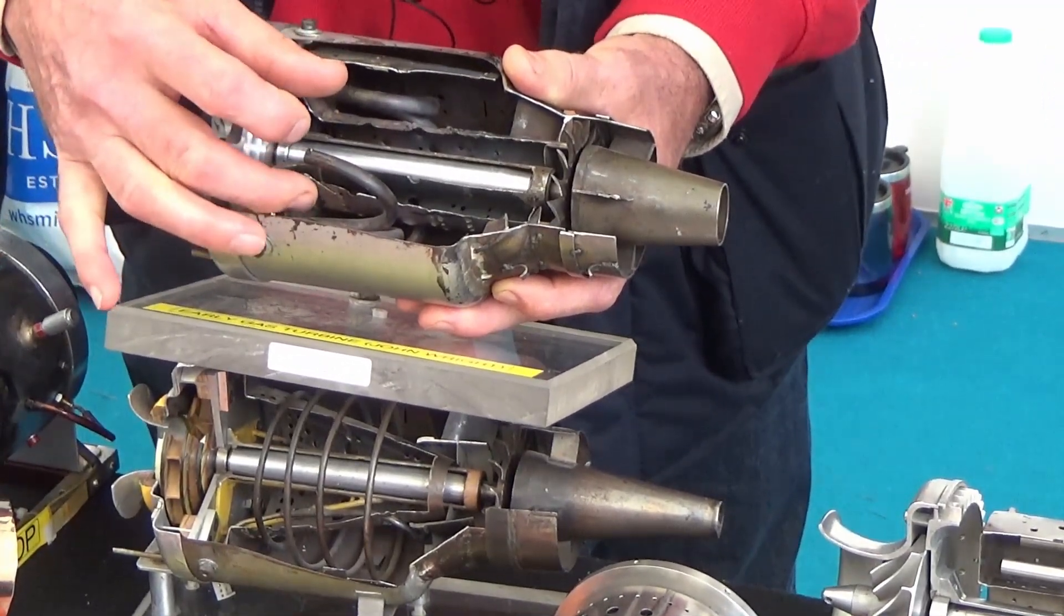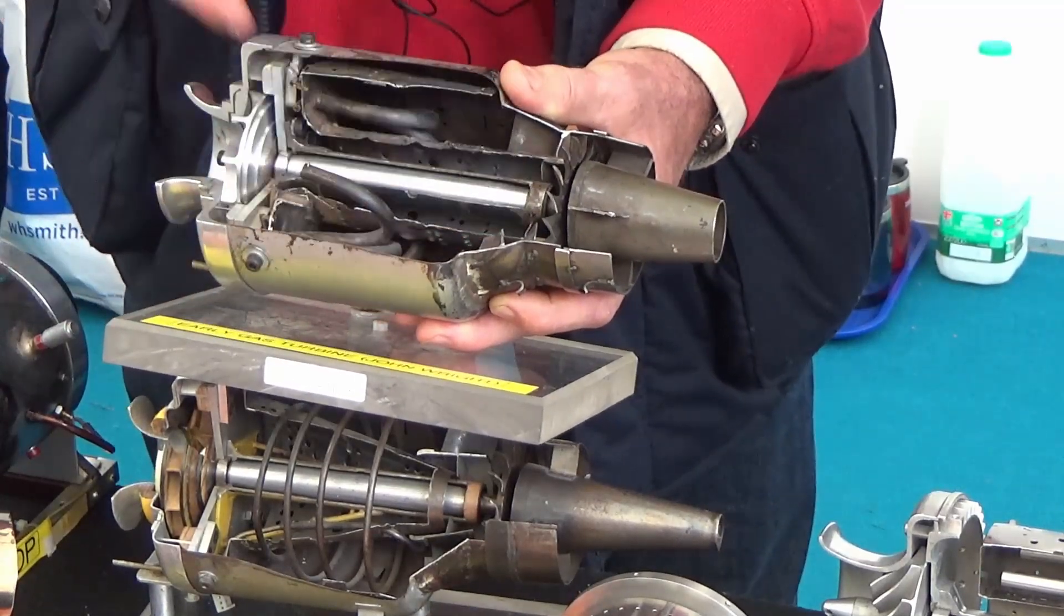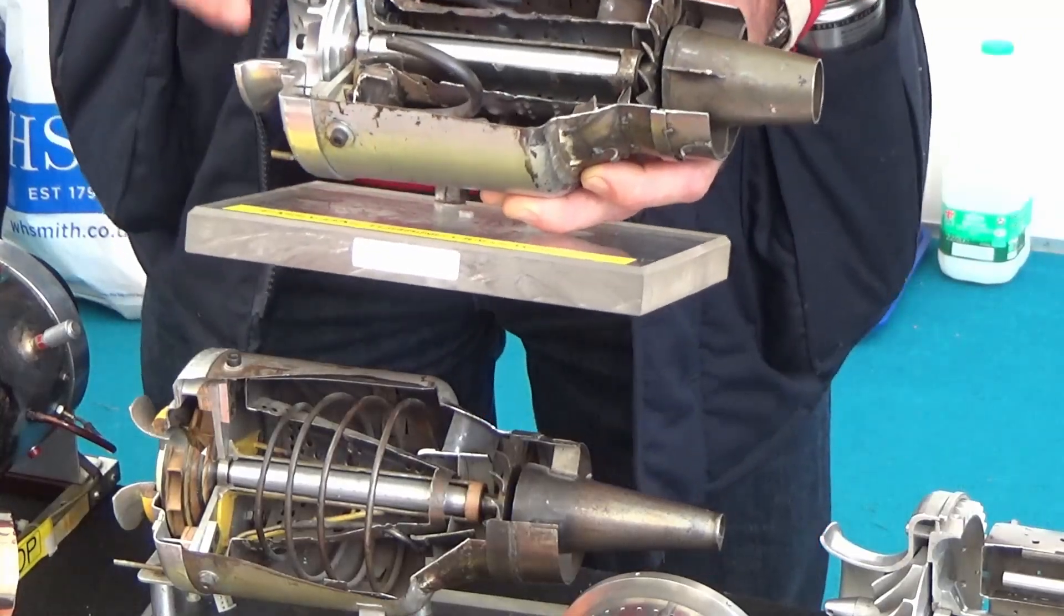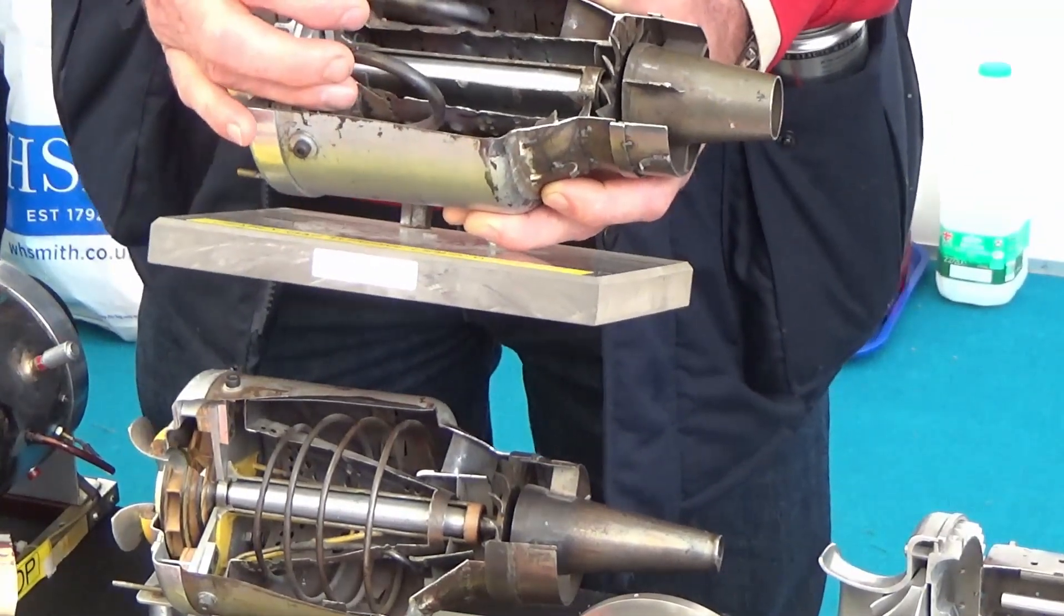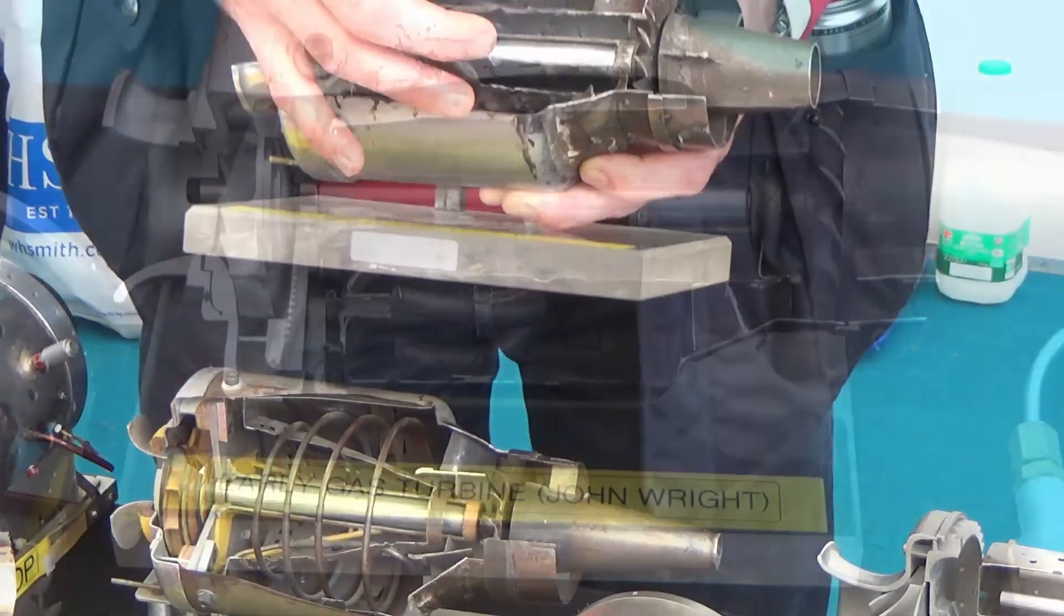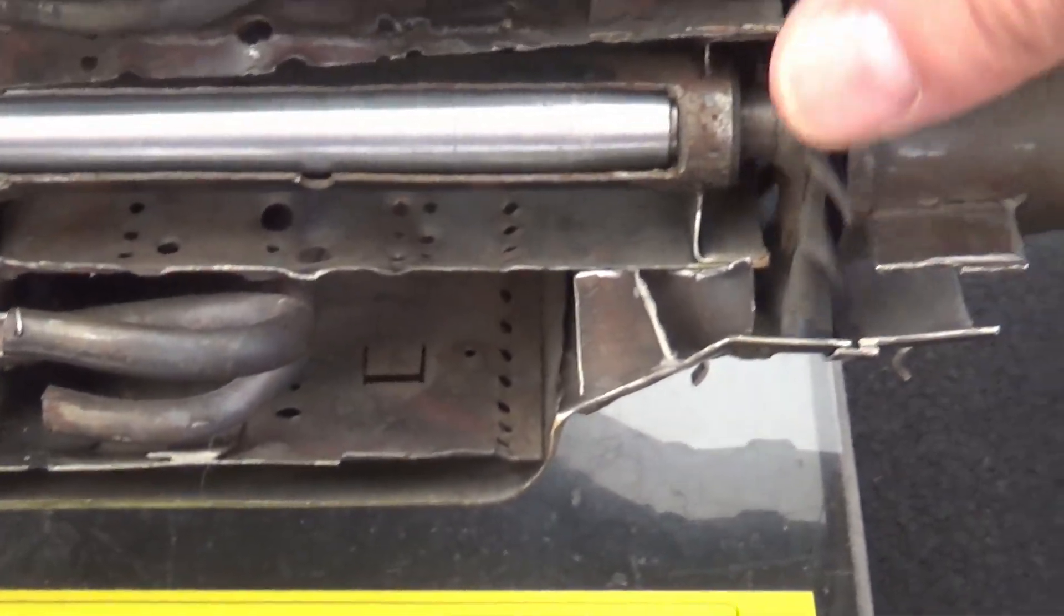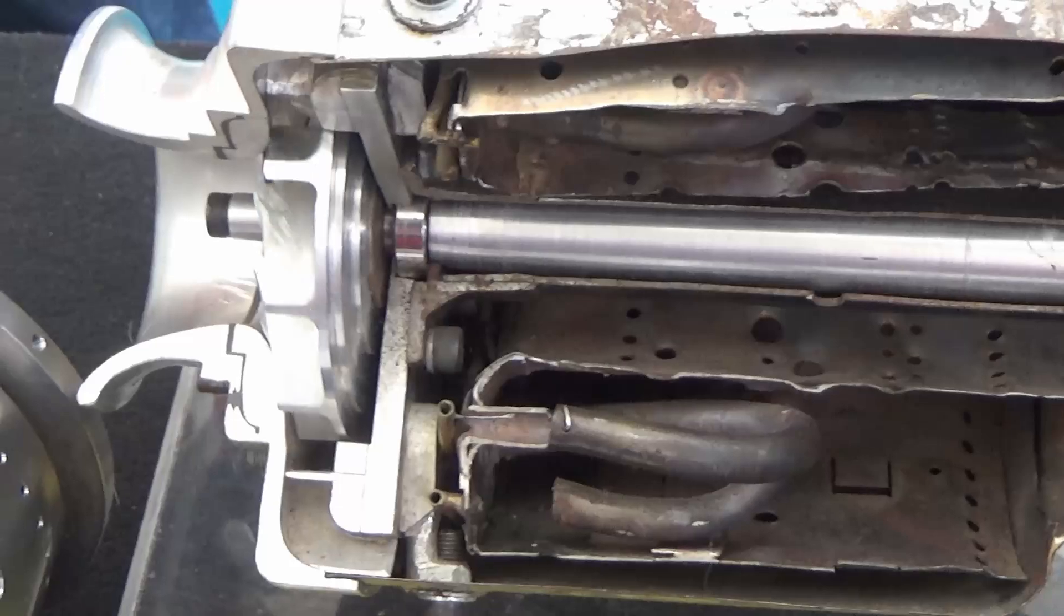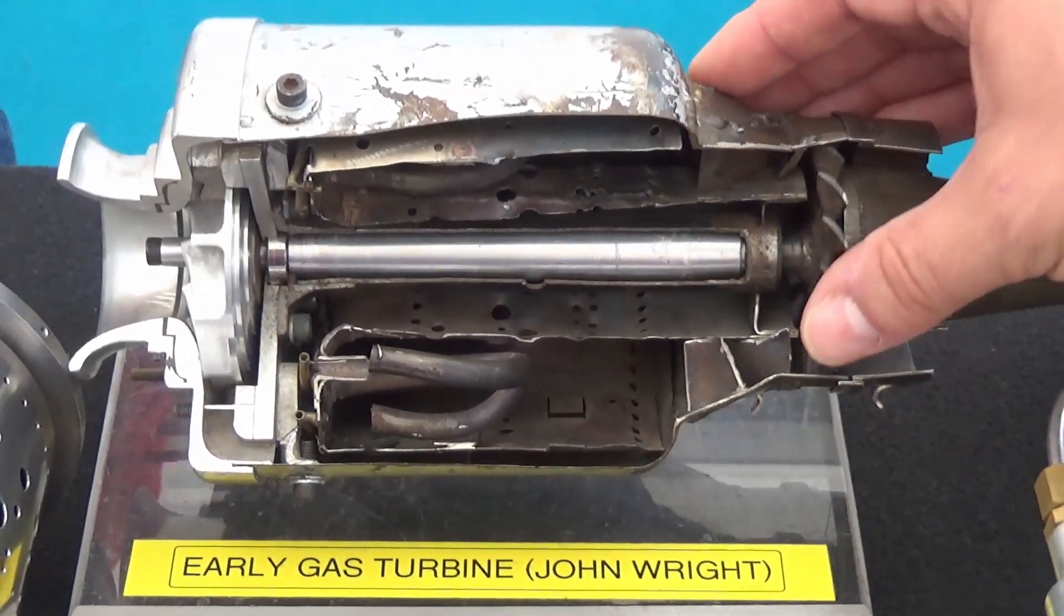So that then brought all the fuel, burning fuel, to the very front of the combustion chamber so that we could then add the remaining air. Because all we are using is approximately 18 to 20% of the air that comes in the front to actually combust. The rest of it, we're using that flame to heat the other 82% to make it expand. So this was still not very efficient, particularly because the compressor couldn't move enough air to produce a particularly heavy thrust.